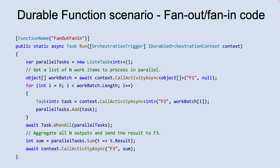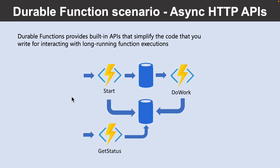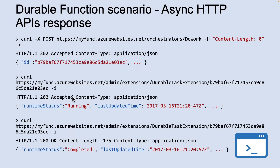In the Fan Out scenario, work is distributed to multiple instances of Function F2 and the work is tracked by using a dynamic list of tasks. The next pattern is all about coordinating the scale of long-running operations with external clients. A common way to implement this pattern is by having a long-running action triggered by an HTTP call and then redirecting the client to a status endpoint that they can poll to learn when the operation completes. Because the state is managed by the Durable Functions runtime, you don't have to implement your own status tracking mechanism.